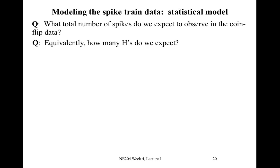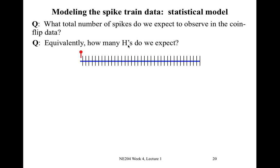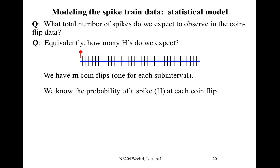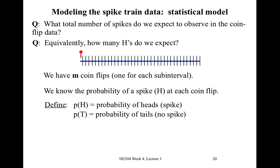Equivalently, instead of asking how many spikes do we expect to observe, we can ask: how many H's do we expect? Because each H indicates a spike in our statistical model. We have our time axis divided up into lots of tiny sub-intervals, and we have M coin flips — one in each sub-interval, with M total sub-intervals. We know the probability of a spike, or flipping our coin and observing H, in each sub-interval.